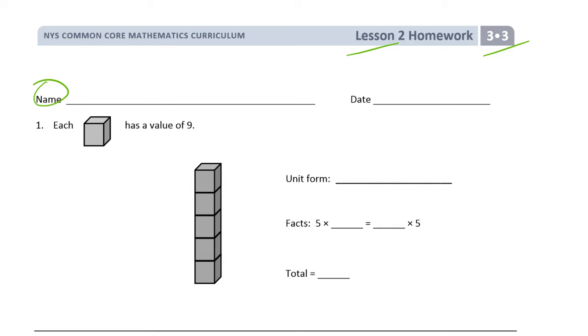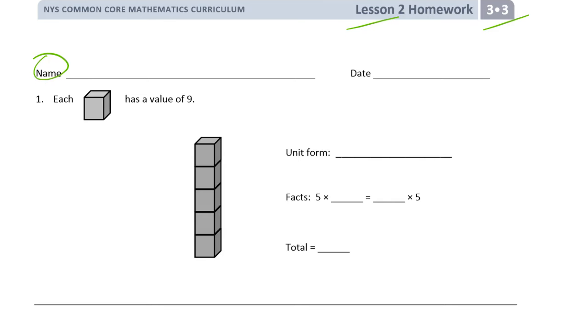And we've got some stacks here. Each cube has a value of 9. So it's like each one of these is a 9. And how many are there? There's 1, 2, 3, 4, 5. There's 5 nines. So there's 5. That's how you write it in unit form. And now your multiplication facts. 5 times 9 equals 9 times 5. That's the commutative property. We can change the order of the factors and we'll have the same product.